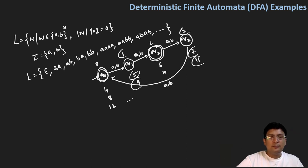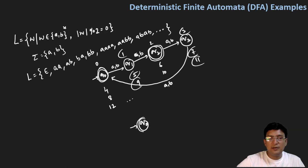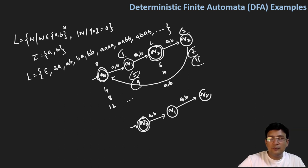We can design the same automata in different ways. For example, if q0 is both the start and final state (since epsilon must be accepted), on getting A or B we move to q1. On getting A or B again, we move to q2, which is the final state. On getting A or B again from q2, we reach back to q1.